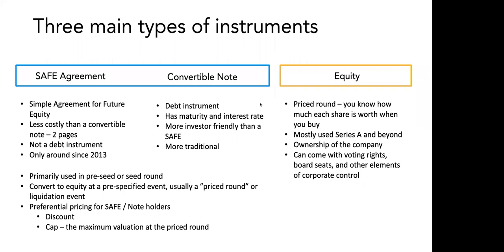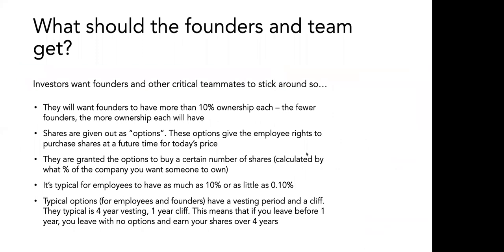Investors always say at the early stage, an investor is putting money in you as much as they're putting in your company. So there are mechanisms they can use to make sure that you stick around. Investors want founders that each have at least around 10% ownership. Obviously, the more founders you have, the smaller the percent of equity each will have. But if someone has 0.005% of the company, most investors won't really think of them as a co-founder — it would be easy for them to jump ship and go to another startup.